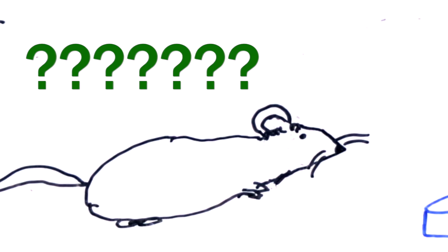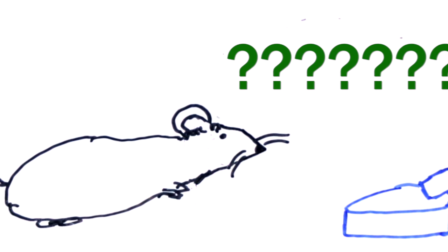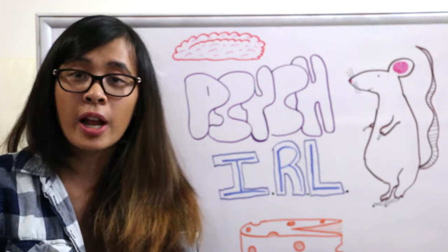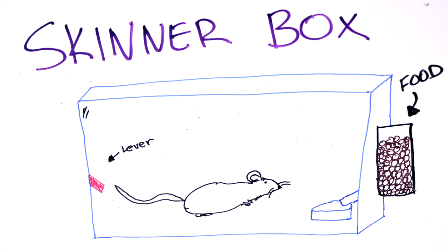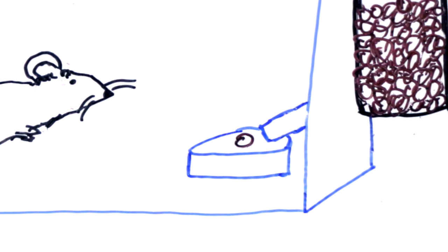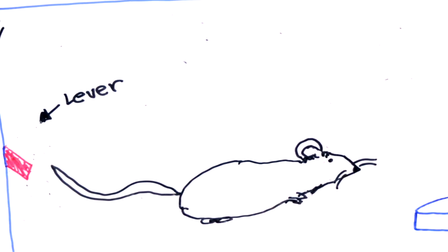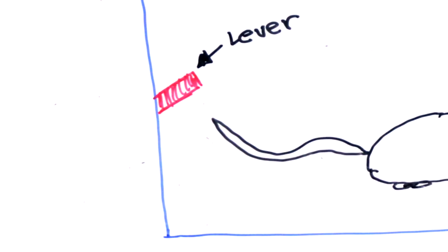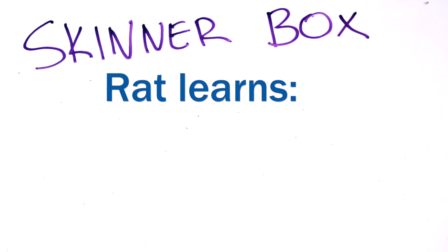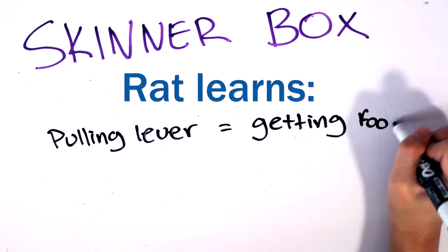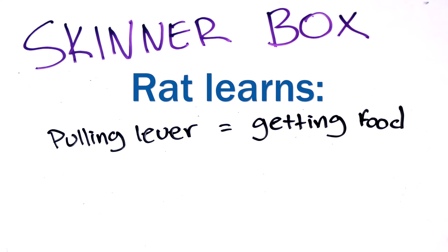Of course, the rat doesn't know this information. So being a rat, it walks around and accidentally hits the lever. The rat notices there's food in its bowl and takes the reward. After a few more of these accidents, the rat notices that every time it hits the lever, food comes out from the dispenser. Eventually, the rat learns: if I pull this lever, I get food.